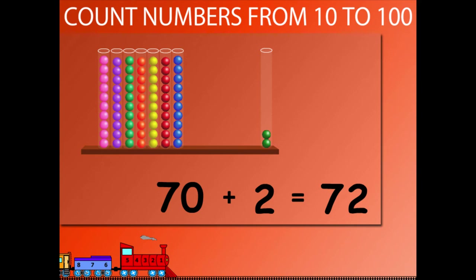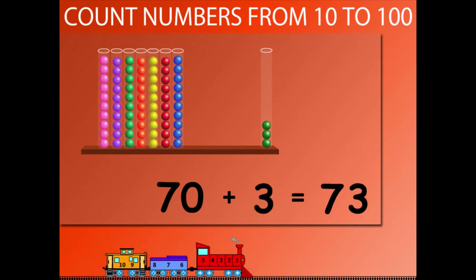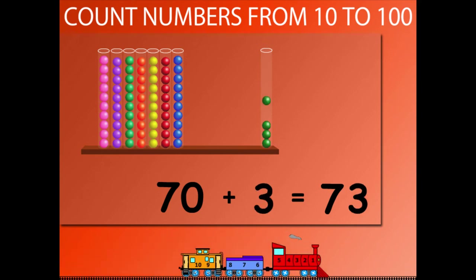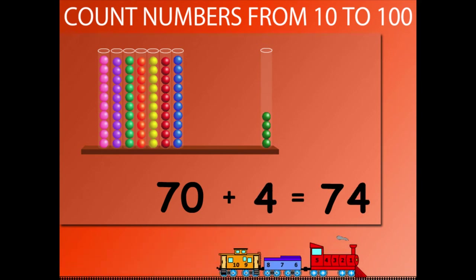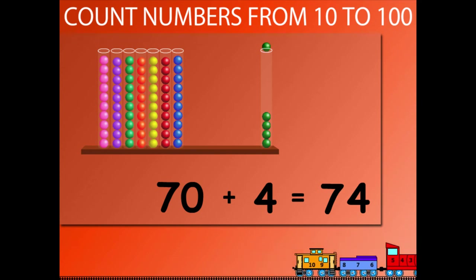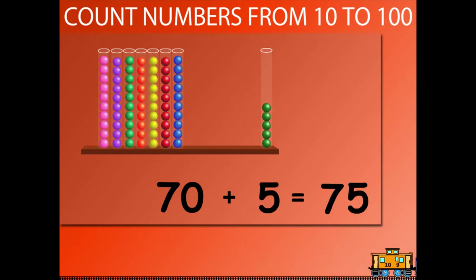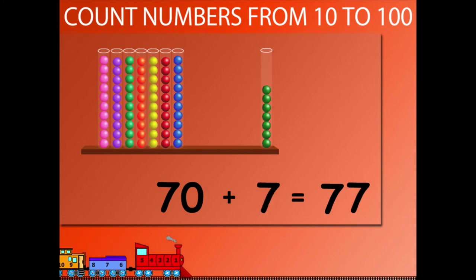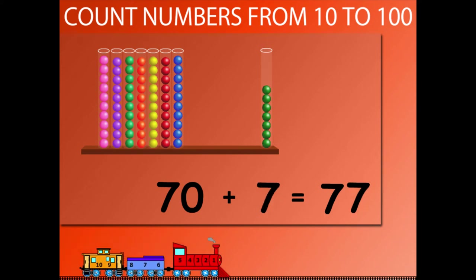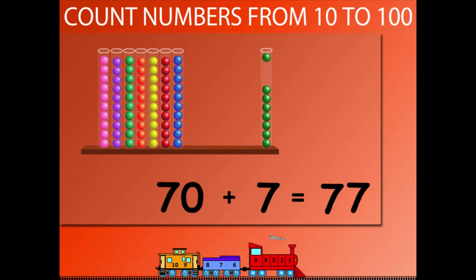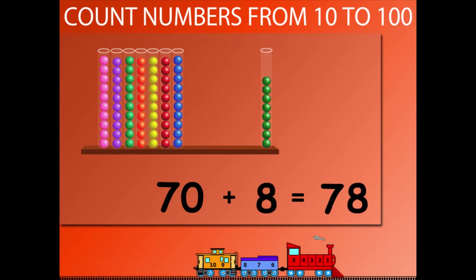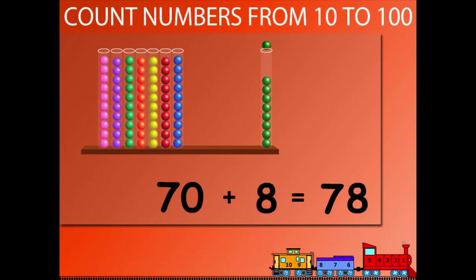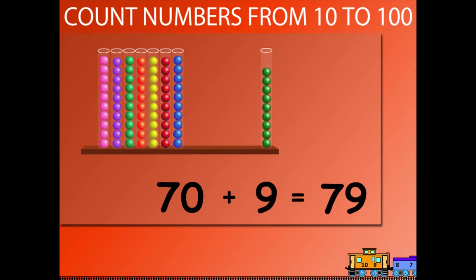70 plus 2 is equal to 72. 70 plus 3 is equal to 73. 70 plus 4 is equal to 74. 70 plus 5 is equal to 75. 70 plus 6 is equal to 76. 70 plus 7 is equal to 77. 70 plus 8 is equal to 78. 70 plus 9 is equal to 79.